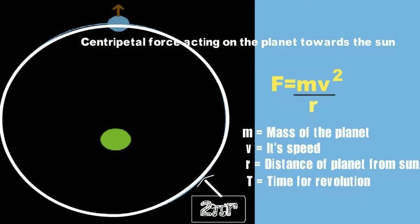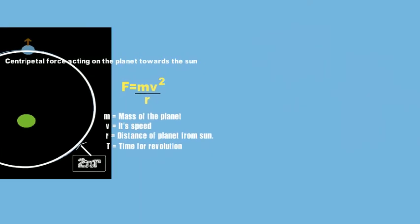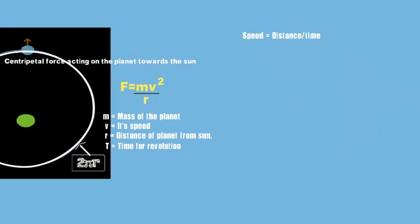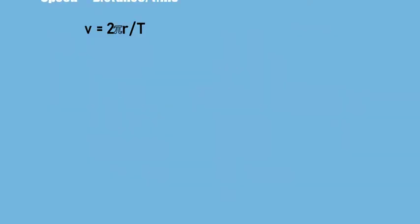We know that speed is equal to distance upon time. So we can express the value of v by using this formula, distance upon time. So we get v = 2πr/T.